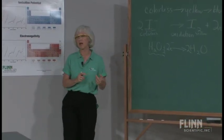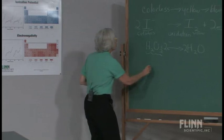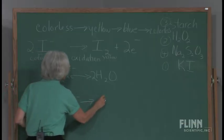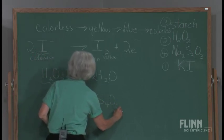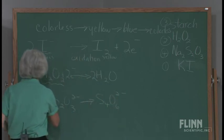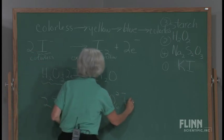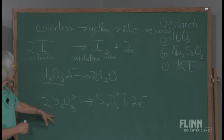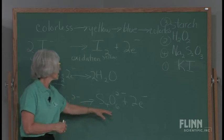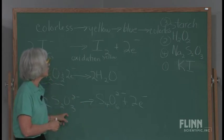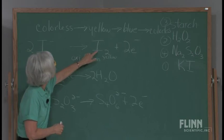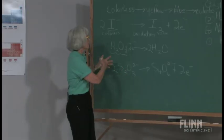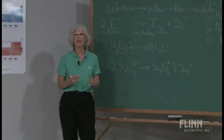This next half-reaction is not one that students would readily volunteer, but the thiosulfate ion becomes S₄O₆²⁻. The thiosulfate ion is itself oxidized, but it's actually the reducing agent that reduces I₂ back to I⁻. This is good practice for equation writing.